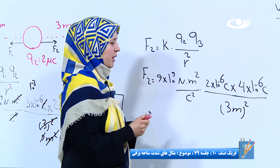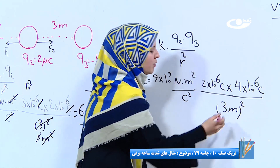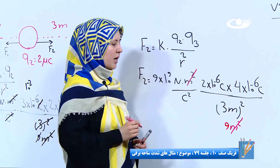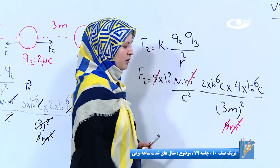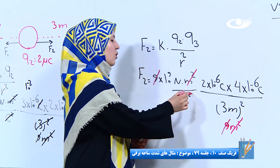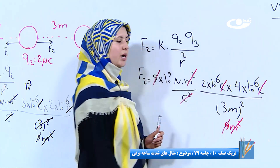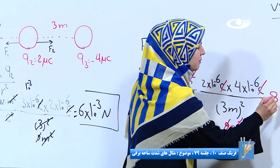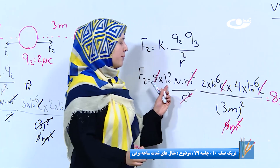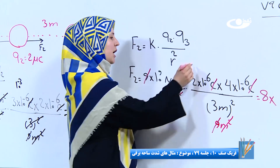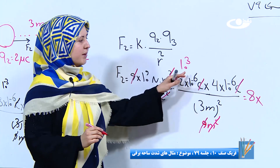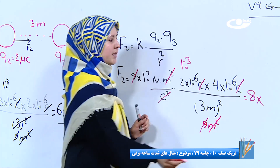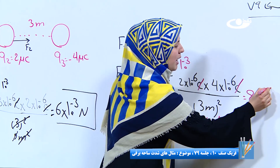بیاین که با همدیگر ساده بسازیم. سه که به توان دو برسن می‌شه نه. متر مربع پایین با متر مربع بالا خلاص می‌شه. عدد نه بالا با عدد نه پایین خلاص می‌شه. کولمب مربع همراه دو کولمبی که در صورت داریم خلاص می‌شه. دو ضرب چهار چند شده؟ هشت. ۱۰ به توان ۹ ضرب ۱۰ به توان منفی ۶ می‌شه ۱۰ به توان ۳. ۱۰ به توان ۳ و ۱۰ به توان منفی ۶ می‌شه ۱۰ به توان منفی ۳. پس ما داریم ۸ ضرب ۱۰ به توان ۳.